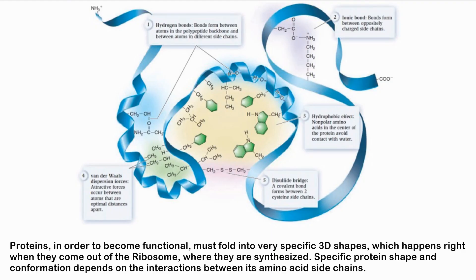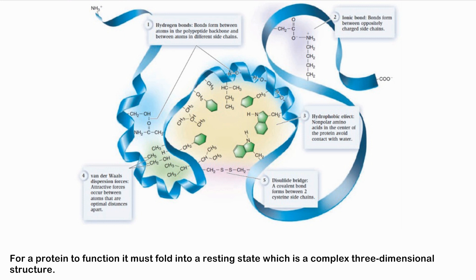Proteins, in order to become functional, must fold into very specific 3D shapes, which happens right when they come out of the ribosome where they are synthesized. Specified protein shape and conformation depends on the interactions between amino acid side chains. For a protein to function, it must fold into a resting state — a complex three-dimensional structure.